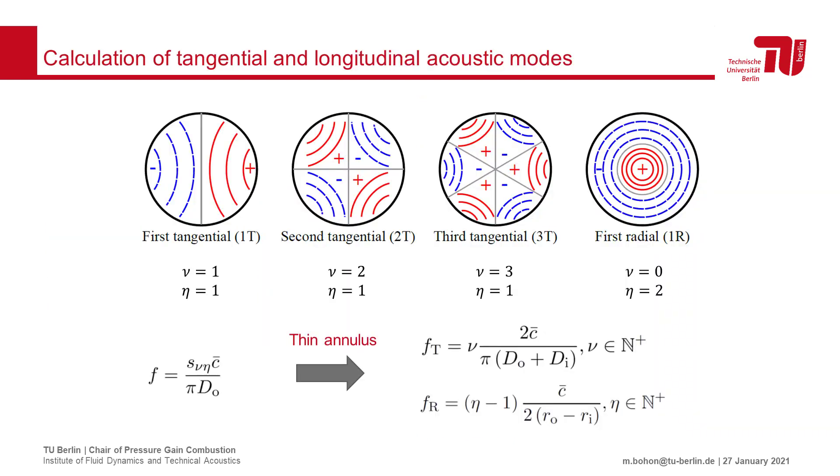However, first as a reference, we can estimate the frequencies of the transverse and longitudinal acoustic modes in the combustor. The transverse modes are calculated for a thin annular duct with acoustically hard walls. Both the tangential and radial modes can be calculated based on the speed of sound in the combustor, the annular geometry, and the roots of the first derivative of the associated Bessel functions.